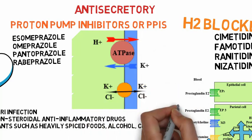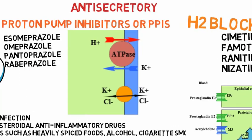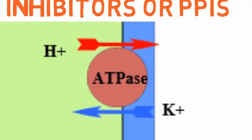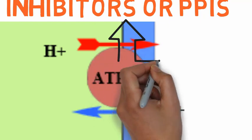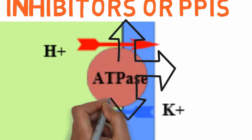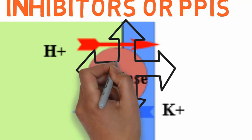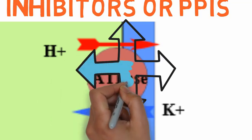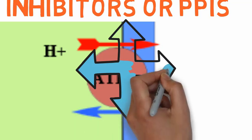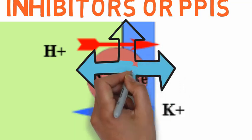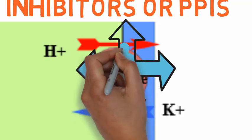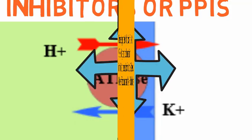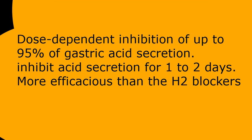After they are absorbed from the gut, the drugs are distributed to the secretory canaliculi and the gastric mucosa and converted to active metabolites, which form a covalent disulfide link with a cysteine residue in the proton pump H+/K+ ATPase, found in the luminal membrane of gastric parietal cells. These drugs irreversibly inhibit the proton pump and prevent the secretion of gastric acid for an extended period. A single dose can inhibit acid secretion for one to two days, and the drugs can produce a dose-dependent inhibition of up to 95% of gastric acid secretion. Hence, the PPIs are more efficacious than the H2 blockers for most conditions.